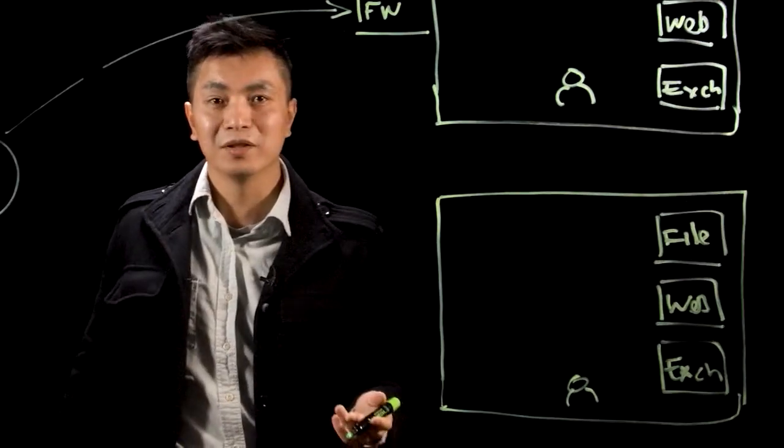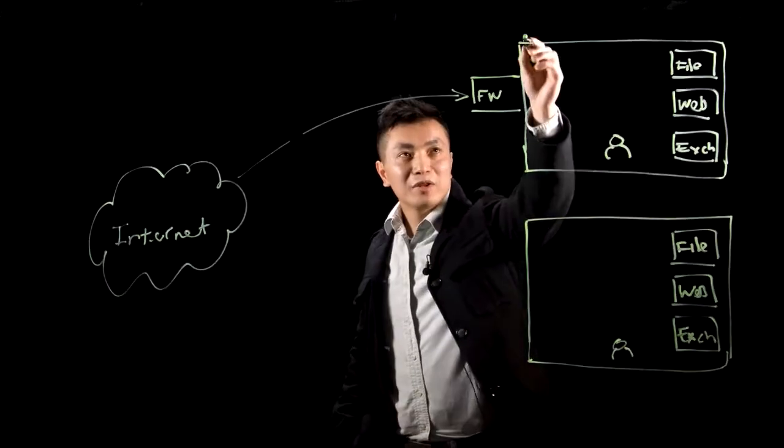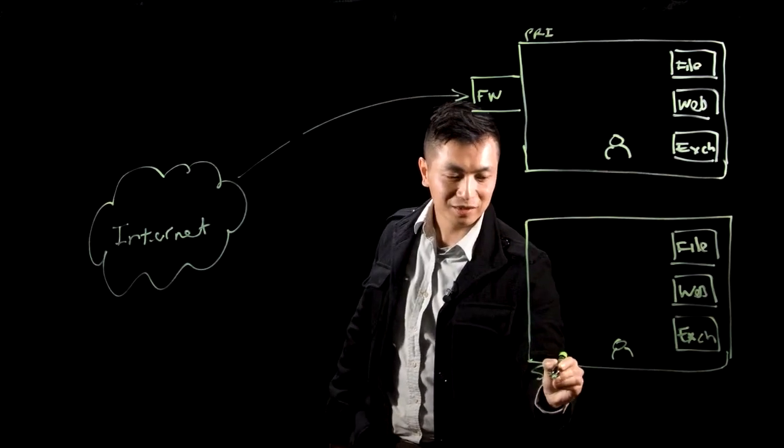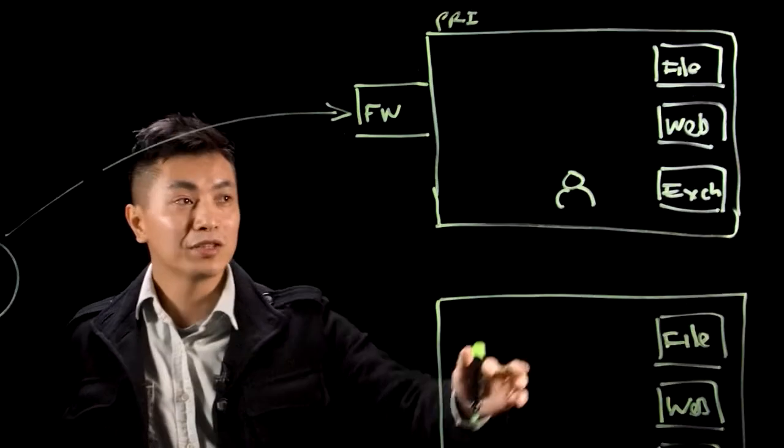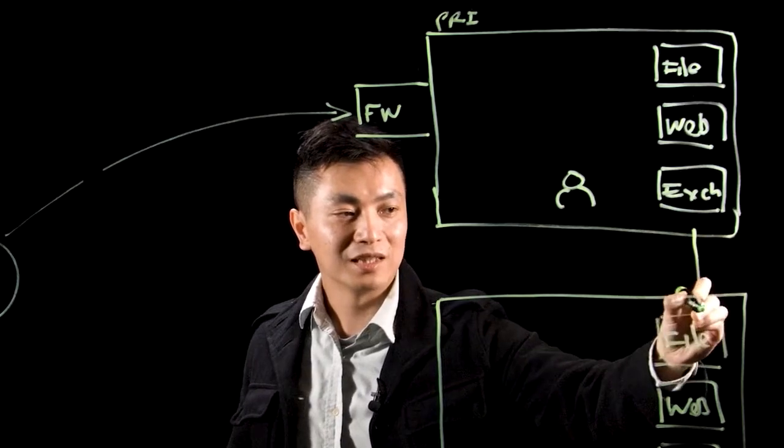In this example, I have an active-passive DR setup. We have a primary site and we have a secondary site. The secondary site is essentially a backup. All resources that we require will be replicated to the secondary site.